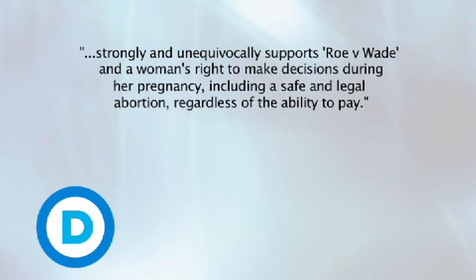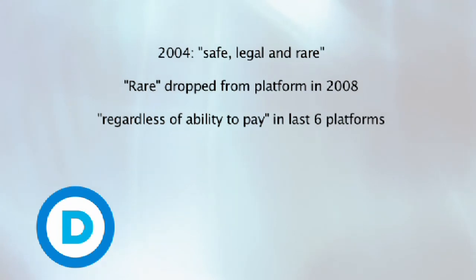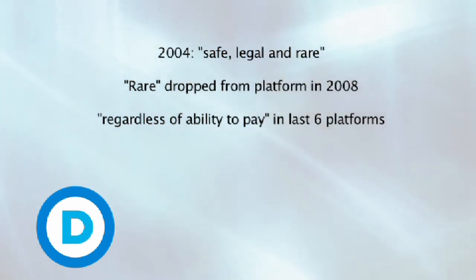On the other side, what the Democrats have done is primarily stuck to the issue of abortion. They strongly and unequivocally support Roe v. Wade and a woman's right to make decisions during her pregnancy, including a safe and legal abortion, regardless of the ability to pay. When they talk about Roe v. Wade, that means abortion for any reason during the full nine months of pregnancy with taxpayer dollars, including for minor daughters. They use the phrase 'safe and legal,' having dropped the word 'rare' a few years ago. The taxpayer funding element has been in the last six platforms since 1988. They also support destructive embryo research and funding for it.